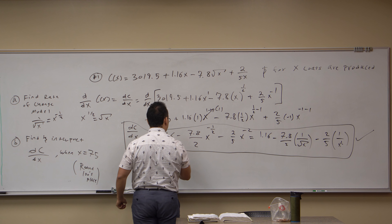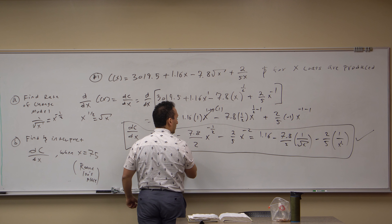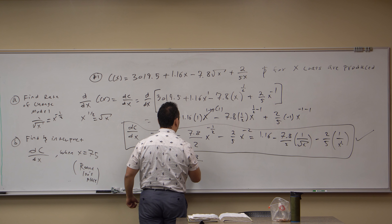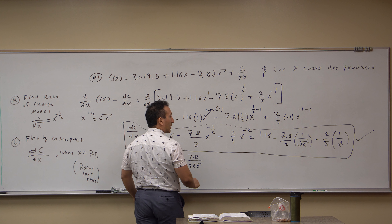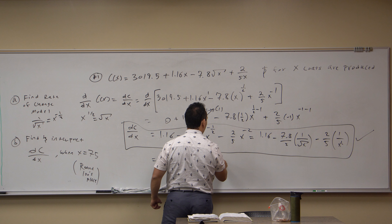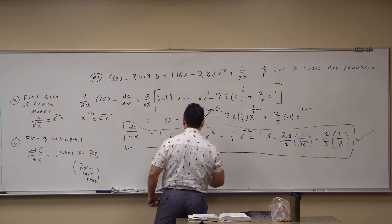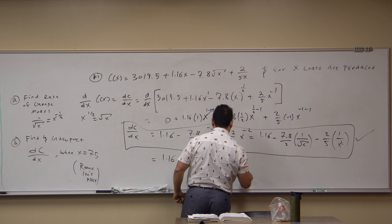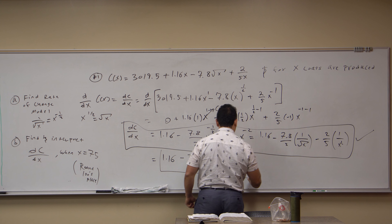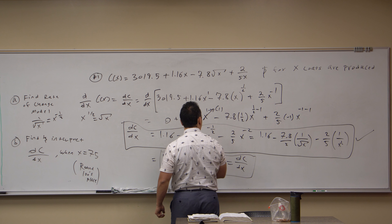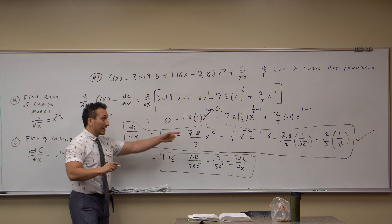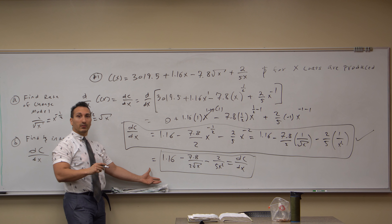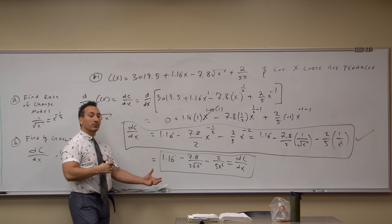If you want to write it in a very compact form, this would be: DC/DX equals 1.16 minus 7.8 divided by 2 times the square root of X, minus 2 over 5X squared. Either form is correct — this is the answer to Part A.